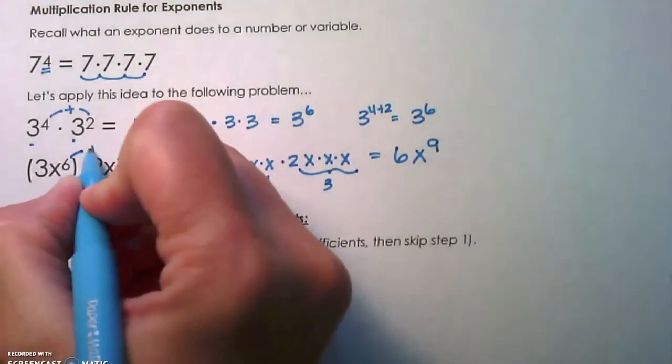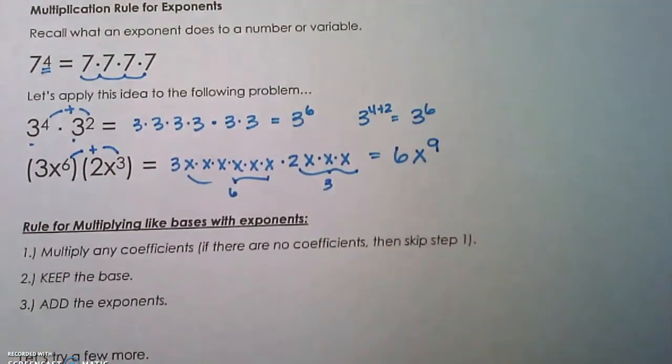Or we could just do 6 plus 3 gives us 9. Alright, so our general rules for multiplying like bases is to,